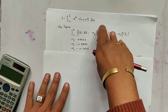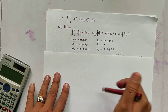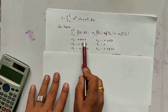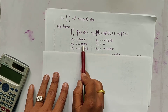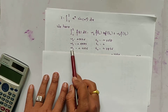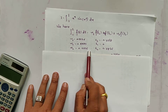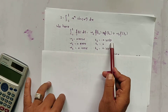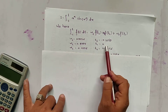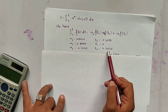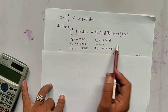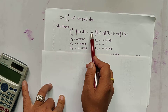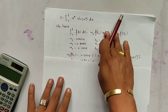By the Gaussian 3-point formula, the weights and nodes are: w1 = 0.5556, w2 = 0.8889, w3 = 0.5556, and t1 = minus 0.7748, t2 = 0, t3 = 0.7746. We now substitute these values to calculate each term.